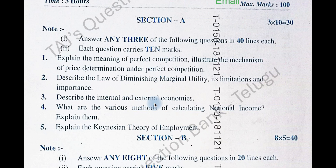The third question from our video was: explain the Keynesian theory of employment. This has also come in your question paper. The fourth question was: describe the law of diminishing marginal utility, its limitations and importance. This question has also repeated.